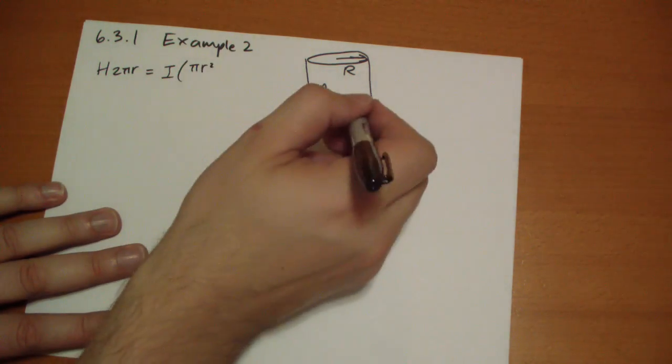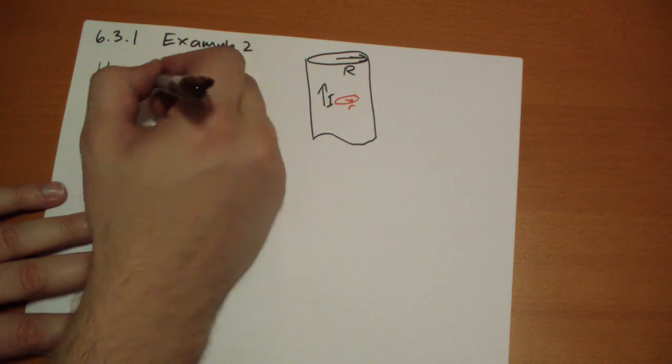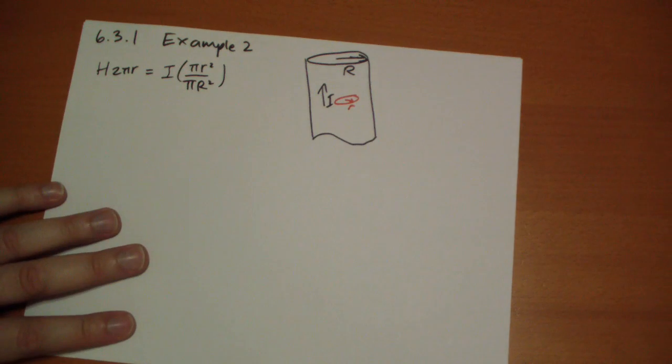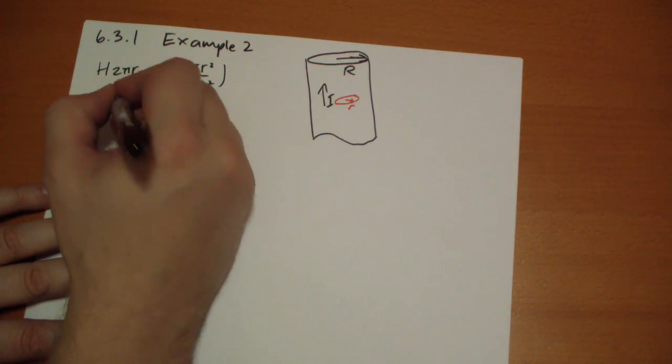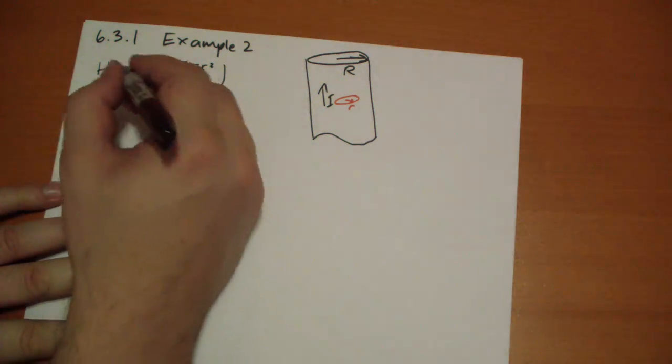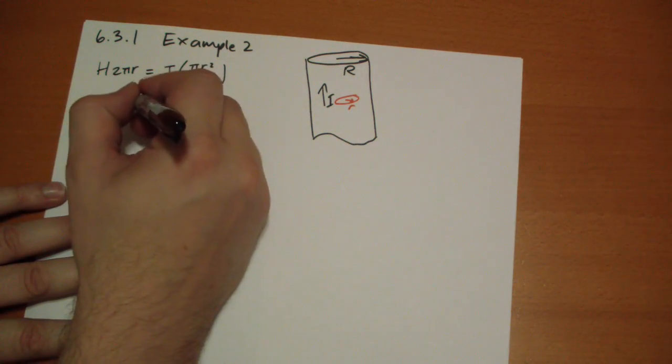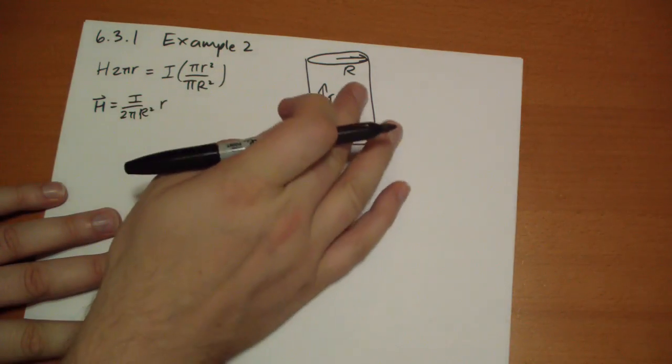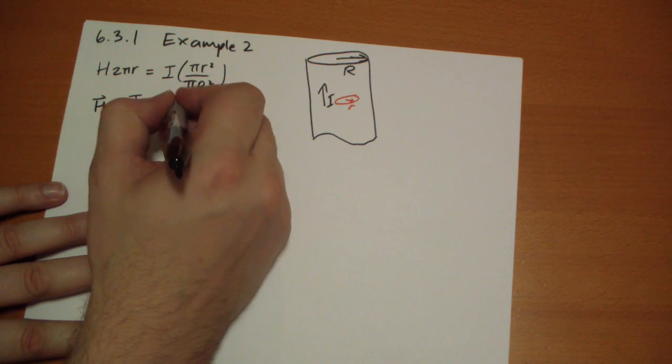And it's the area of this thing, and that current has to be divided across the total area, because it's uniform there. And so we can calculate our H vector is equal to, these guys cancel out, and you get I over 2 pi capital R squared r, and the direction it's going to flow is in the phi hat direction.